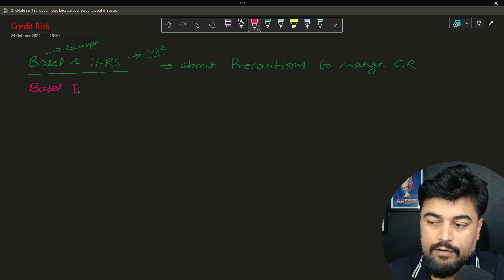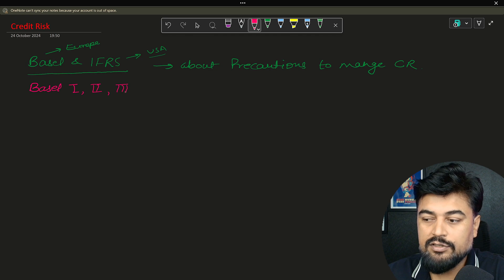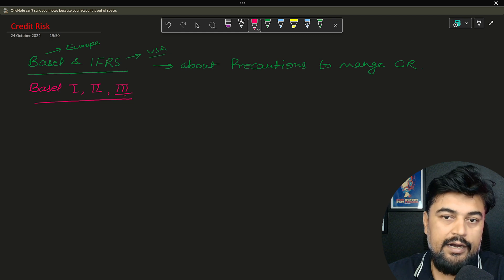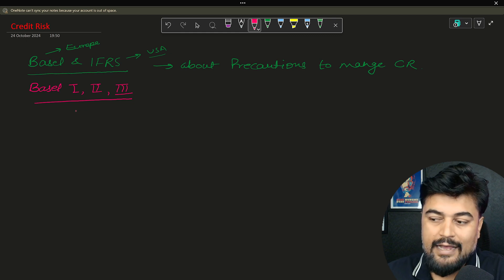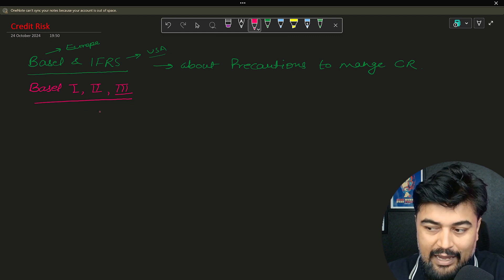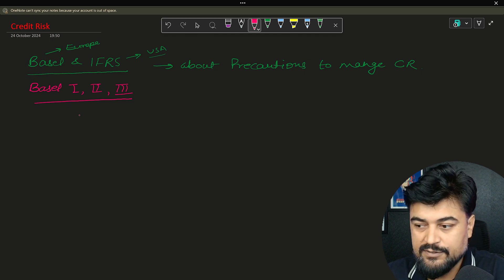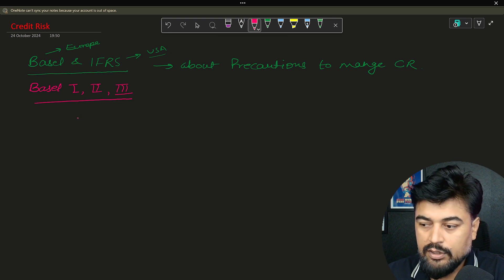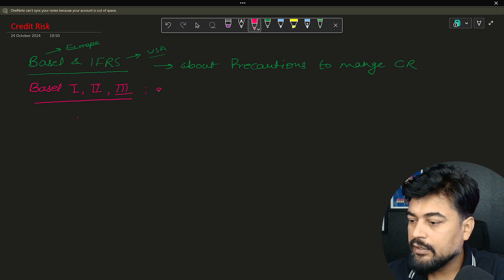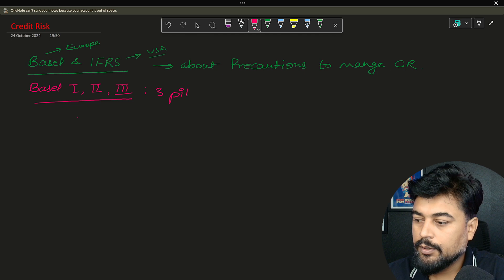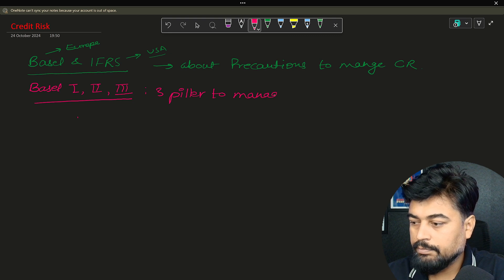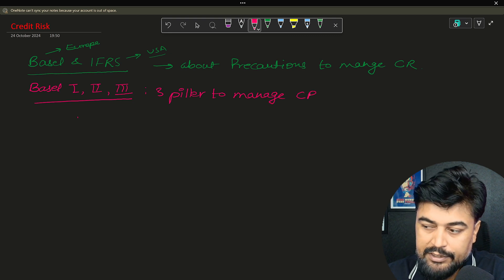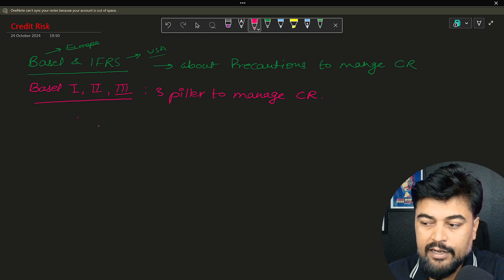If you go as per their terminology, they have divided three pillars to manage credit risk. Now let me write that. Three pillars to manage credit risk. Pillar number one is minimum capital requirement.